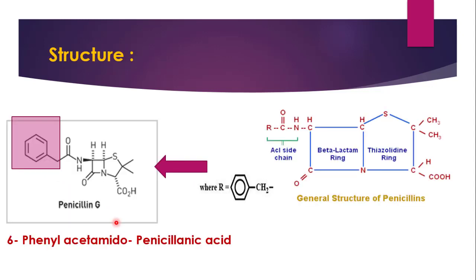To start with the structure of benzyl penicillin — as you can see here, this is the general structure of penicillin which we have already seen in the introductory part of the beta-lactam antibiotics, just as a revision to know about the substituent of penicillin G. This is the beta-lactam ring, this is the 5-membered thiazolidine ring, and this is the acyl side chain.